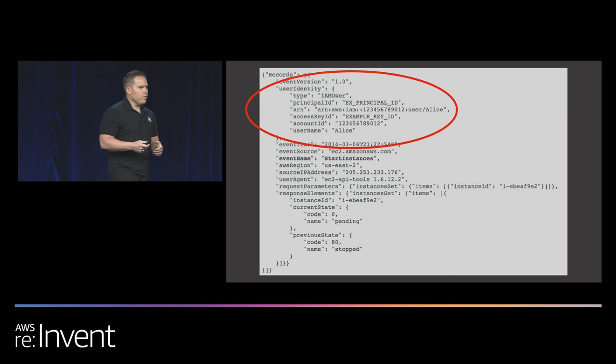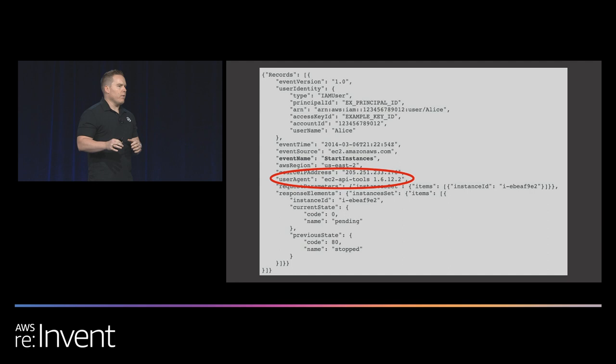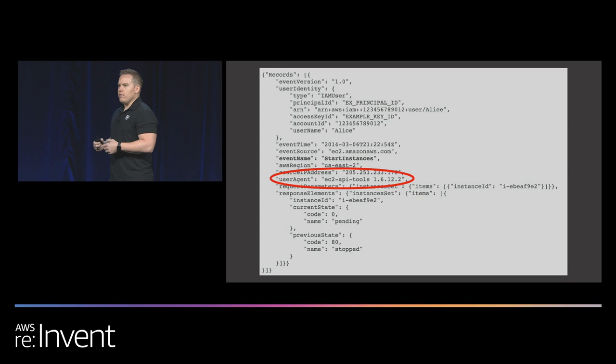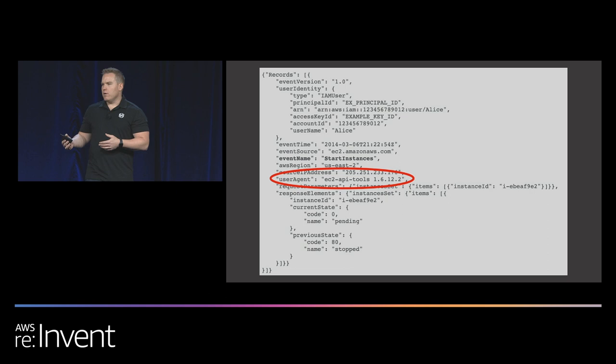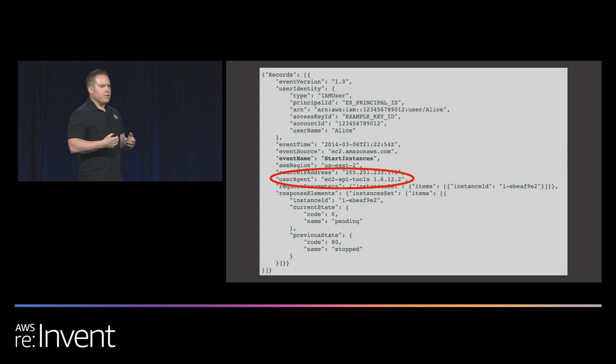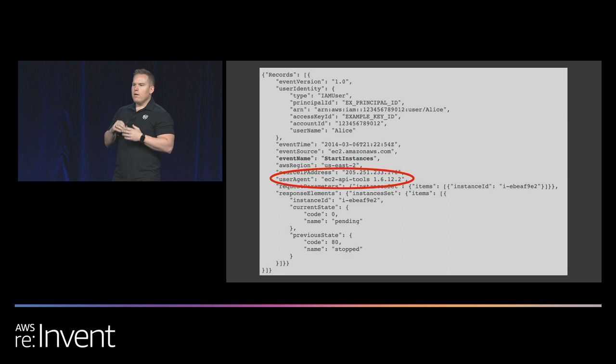One other thing worth mentioning is user agent. If you're an application running Python and talking to AWS, you might be using the Boto3 library, and the user agent you typically see is going to have Boto3 in the name. So if you start seeing user agents that are AWS SDK Java, AWS CLI, or Kali Linux, that might be anomalous. It's also going to provide insight into how your application is being developed — you can start seeing if you're getting browser-based user agents, indicating pre-signed URLs and things like that.